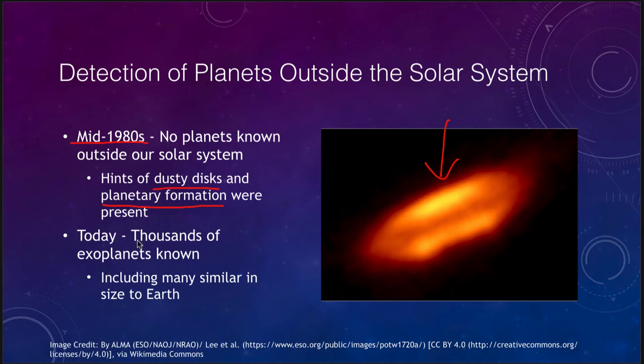We didn't know of any planets that existed outside of our own solar system until the late 1980s. Today, we know thousands of exoplanets — thousands of planets outside our solar system — which includes large planets much larger than Jupiter, and includes planets down to and including the size similar to that of the Earth.